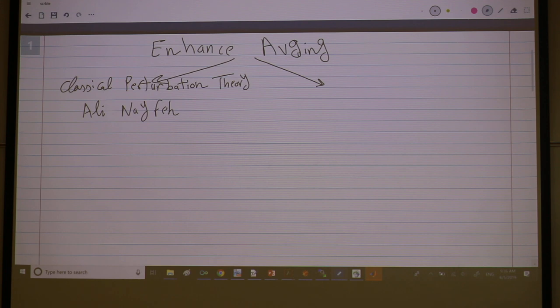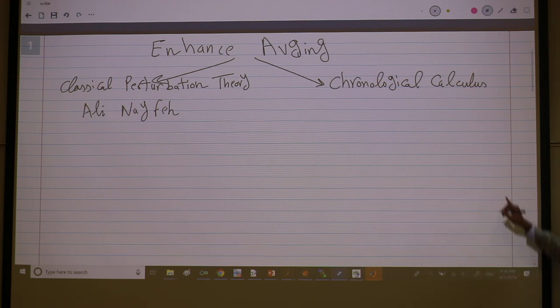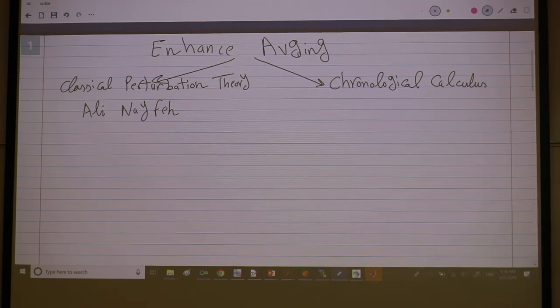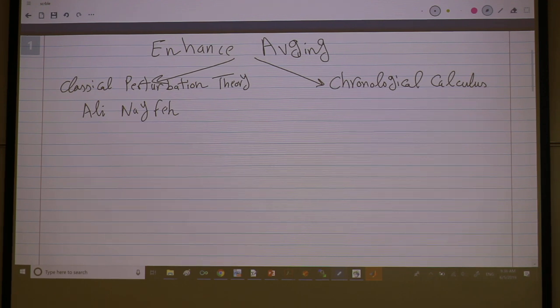The other way is using chronological calculus, which has to do with abstract math, differential geometry. It's not that hard, but it's mathematically appealing. Engineers may favor this route. Mathematicians will definitely favor this route. So this is our topic today, chronological calculus.